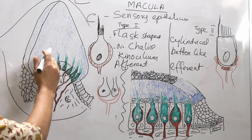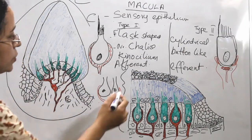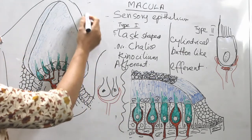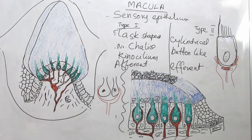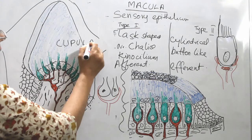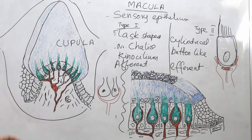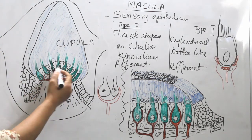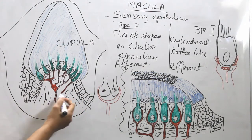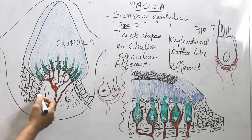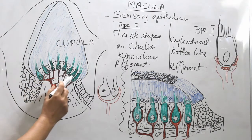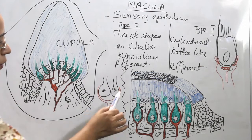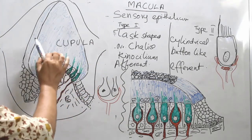In the crista, the difference from the macula is that there is no otoconial membrane. The gelatinous material overlying the sensory epithelium is called the cupula — it is amorphous and occupies around two-thirds of the ampulla. The sensory epithelium is otherwise the same: basement membrane, type 1 and type 2 sensory cells, and supporting cells. The only difference is the cupula instead of the otoconial membrane.